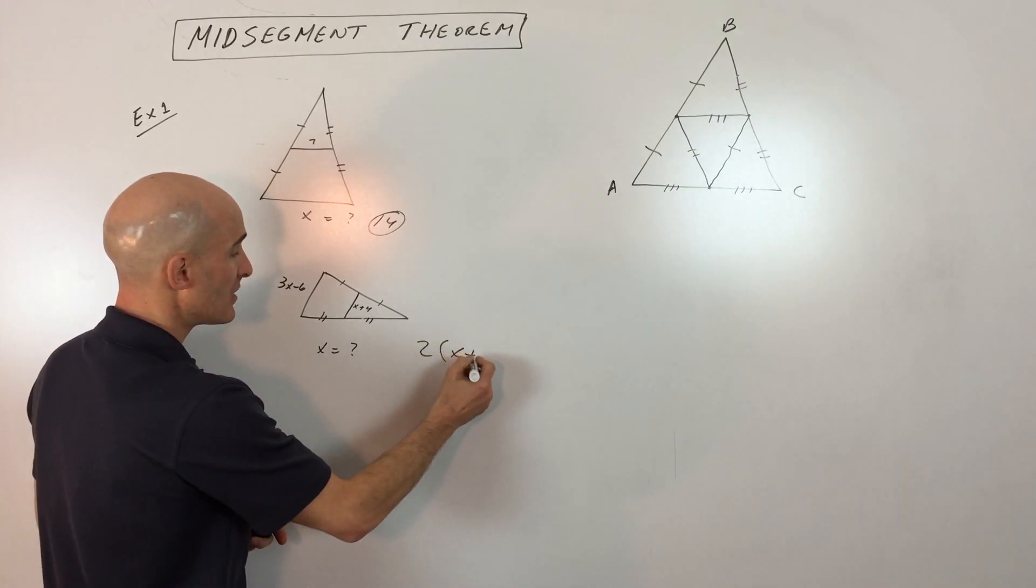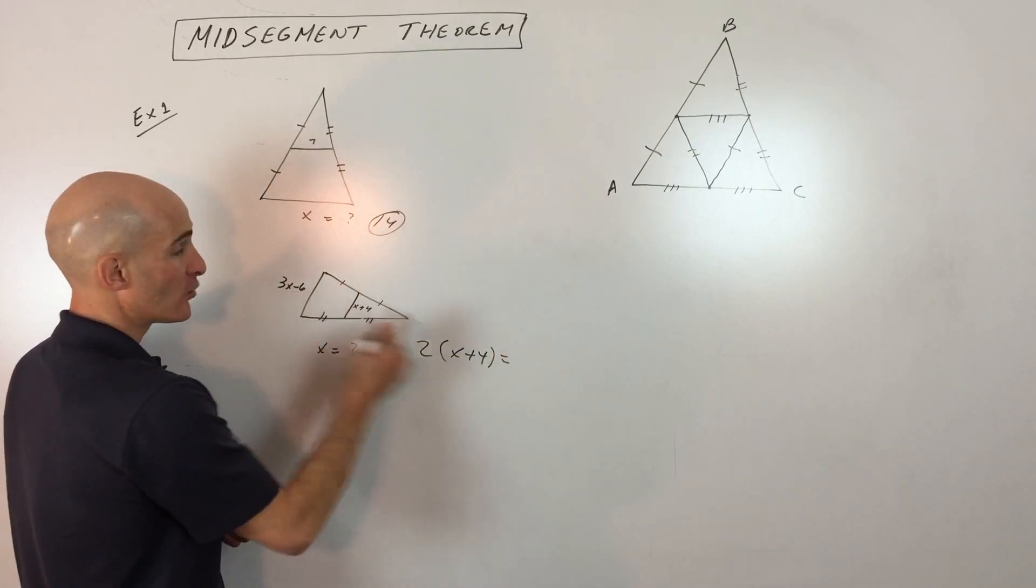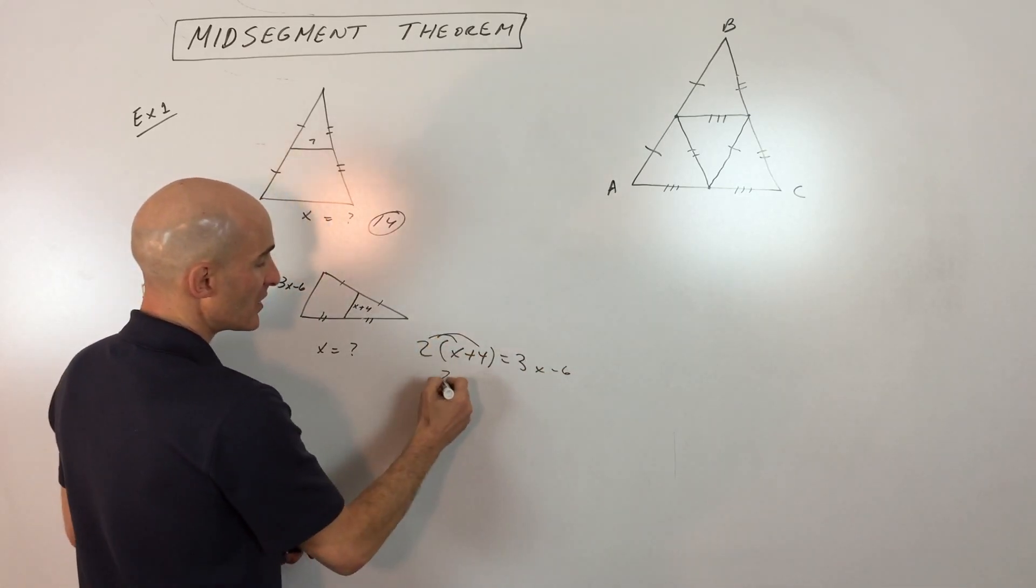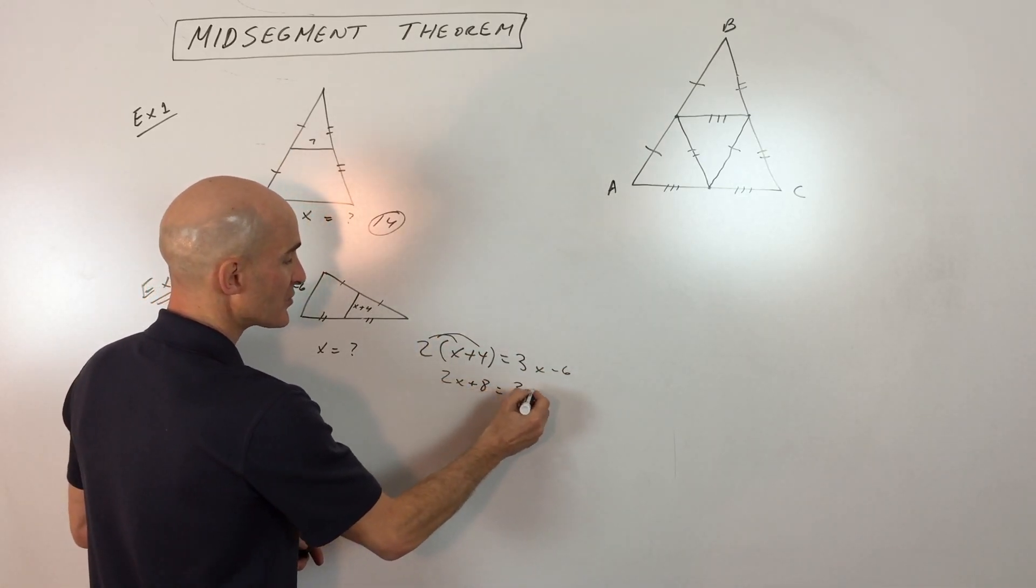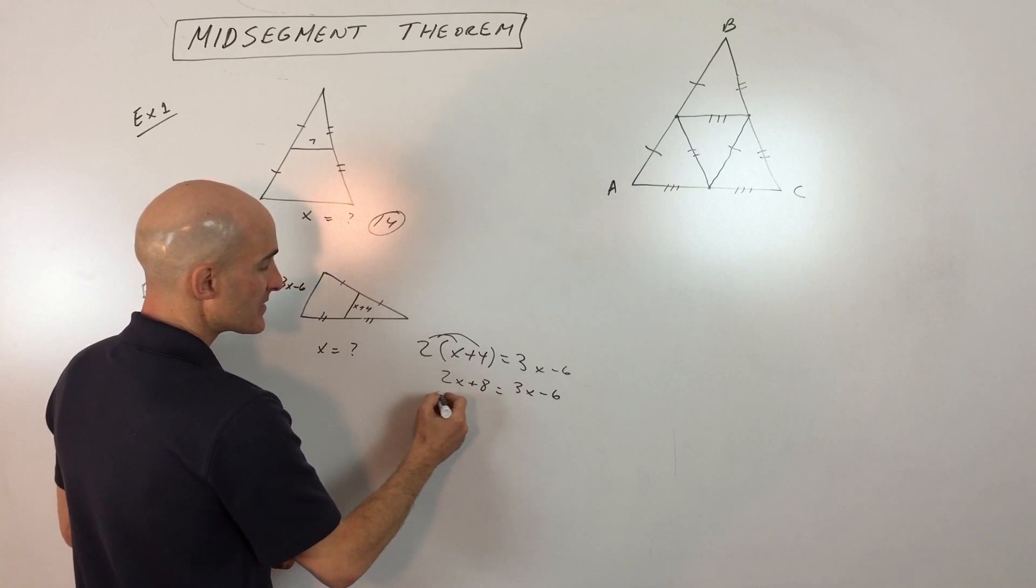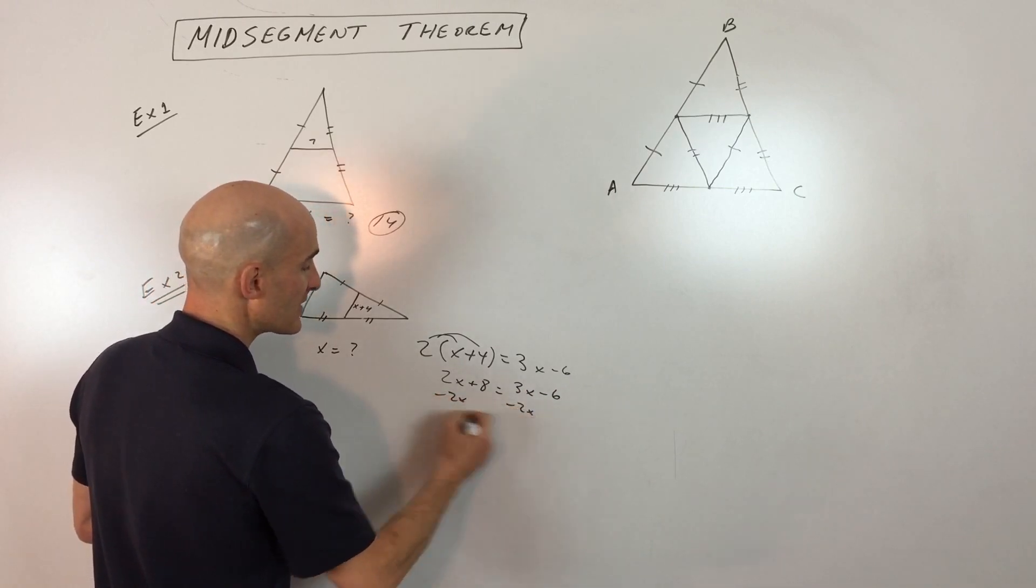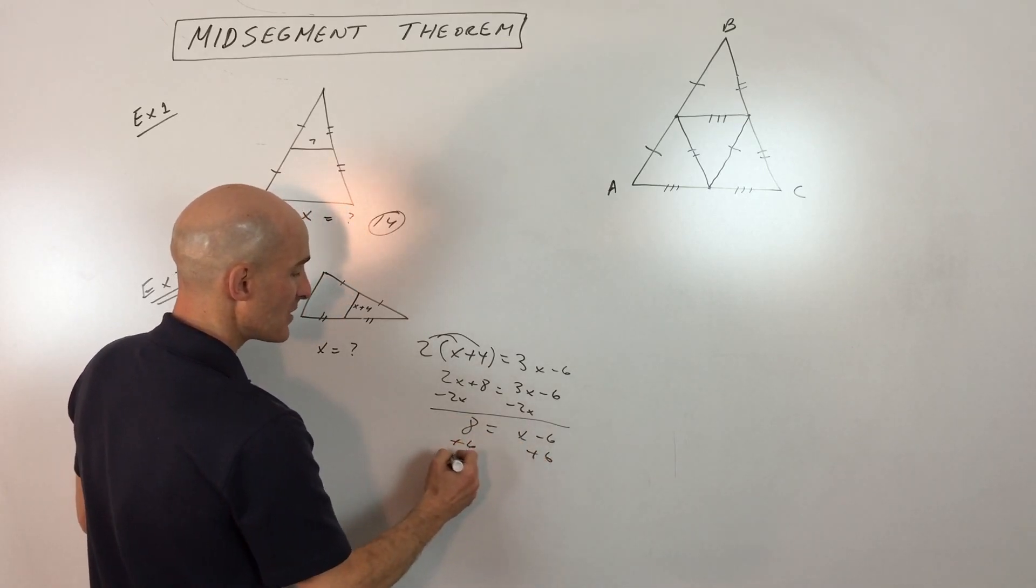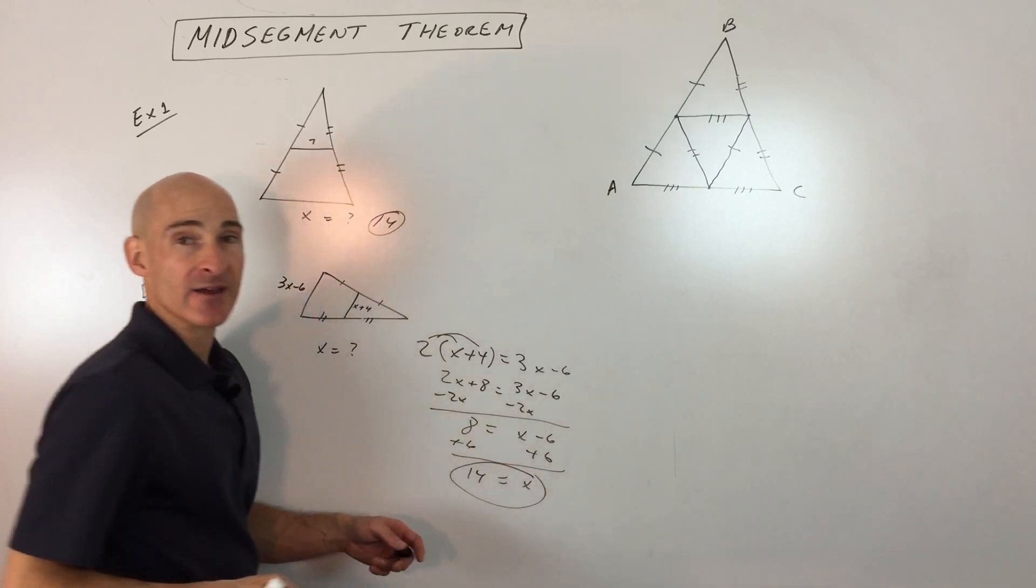So if we double x plus 4, then it will be equal to the base, which is 3x minus 6. Let's just distribute. We get 2x plus 8 equals 3x minus 6. Subtract 2x from both sides. That gives us x minus 6 equals 8, and we're going to add 6 to both sides. So that gives us x equals 14, and we got it.